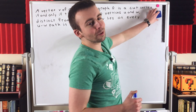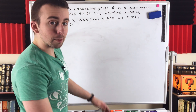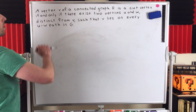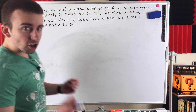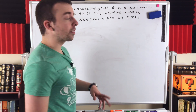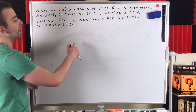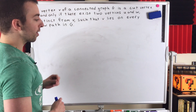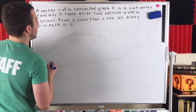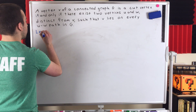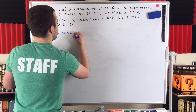All right, so let's just get into the proof. The first direction we will prove — because this is an if and only if statement, so we've got to prove two directions. First, we'll assume that V is a cut vertex of a connected graph G, and then we're going to want to show that by definition of cut vertex, there must exist two vertices U and W distinct from V, such that V lies on every UW path in G. So let's start. We're going to assume our graph G is connected, and let this vertex V be a cut vertex of G.